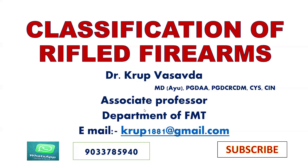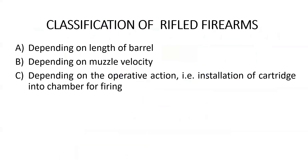So let us check out the classification of rifled firearms. A will be depending on length of barrel, B will be depending on muzzle velocity, and C depending on the operative action — for example, installation of cartridge into chamber for firing.